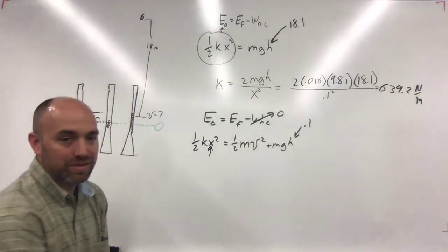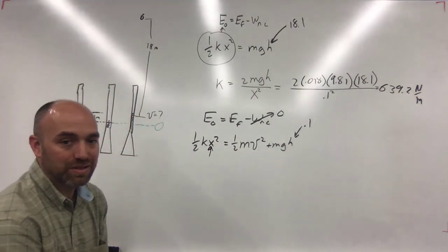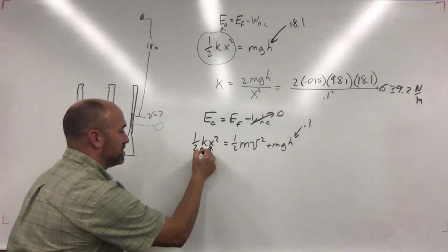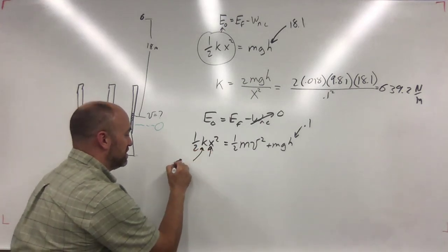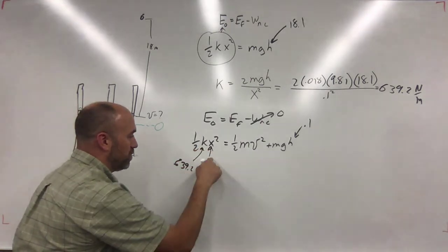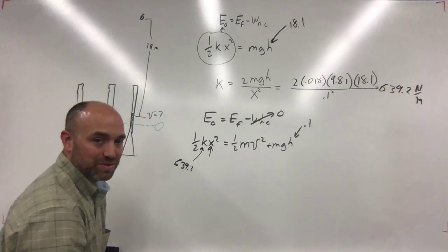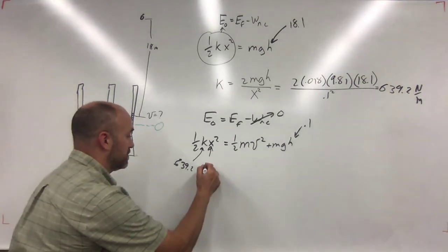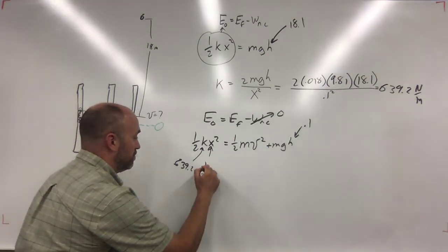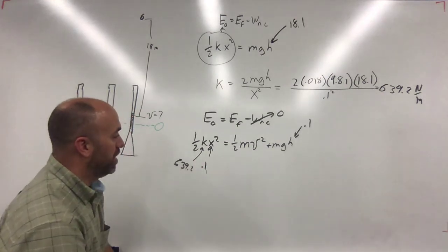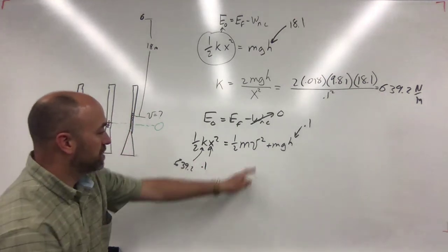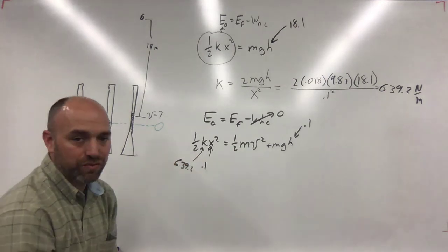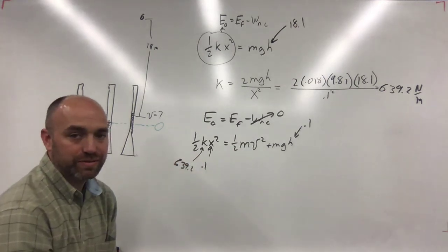So there's no potential energy of the spring. Now you know everything: k is 639.2, x is 0.1, you know all the values except v — and now you solve for v.